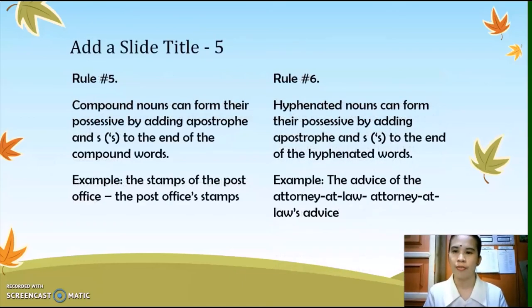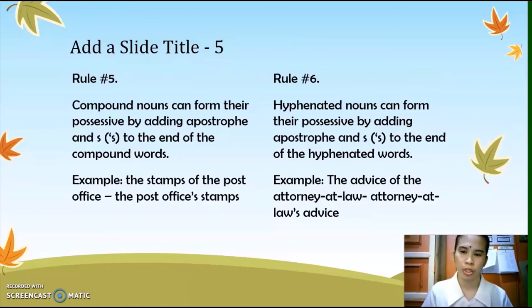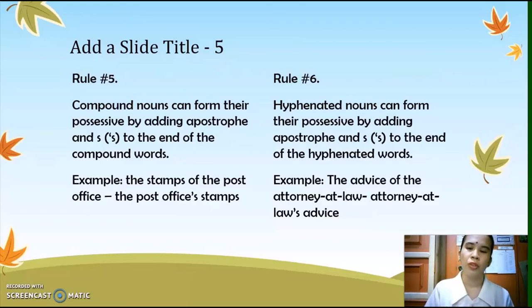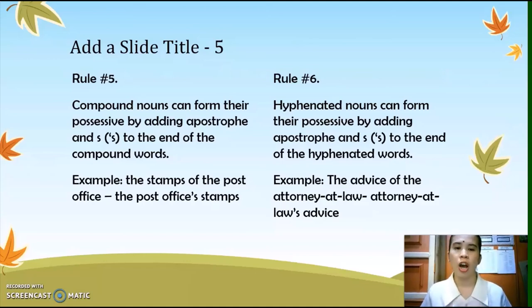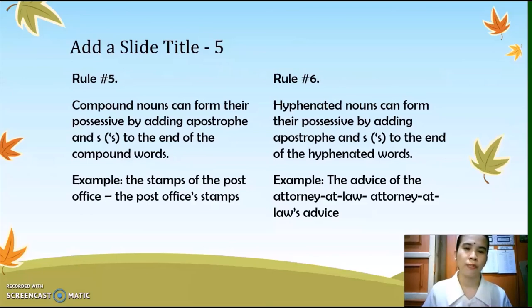Rule number five: compound nouns can form their possessive by adding apostrophe and S to the end of the compound word. For example, 'the stamp of the post office' becomes 'the post office's stamp.' Rule number six: hyphenated nouns form their possessive by adding apostrophe and S to the end of the hyphenated word. For example, 'the advice of the attorney-at-law' becomes 'attorney-at-law's advice.'